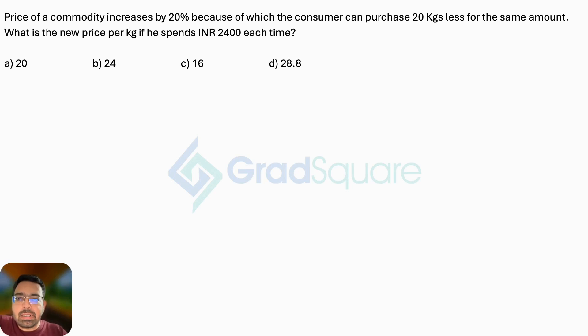Price of a commodity increases by 20% because of which the consumer can purchase 20 kgs less for the same amount. What is the new price per kg if he spends INR 2400 each time?